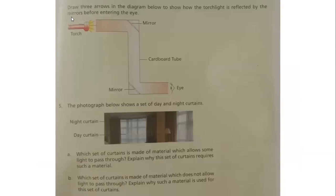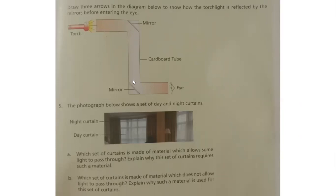Draw three arrows to show how torch light is reflected by mirrors before entering the eye. Reflection is when light moves and changes direction but still travels in a straight line. Light from the source enters in a straight line, hits a mirror and reflection takes place, it changes direction, hits another mirror, gets reflected again, and then reaches the eye. Even though the setup has multiple bends, we can see the light because reflection makes it travel in a straight line at each stage.